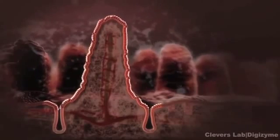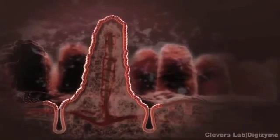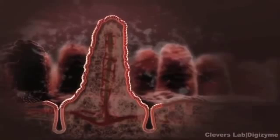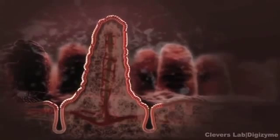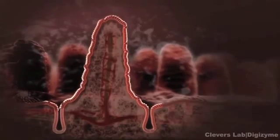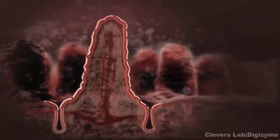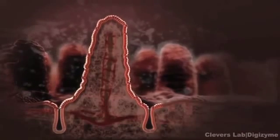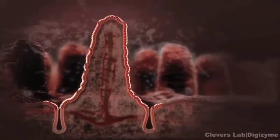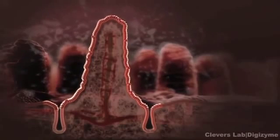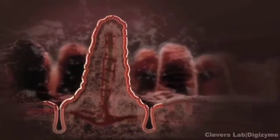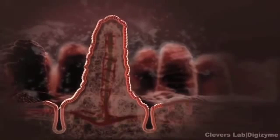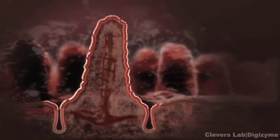Therefore, the only mutations that can lead to the development of a cancer are those that are retained in the crypt. This dictates that such mutations must block the out-migration of mutant cells from the crypt.